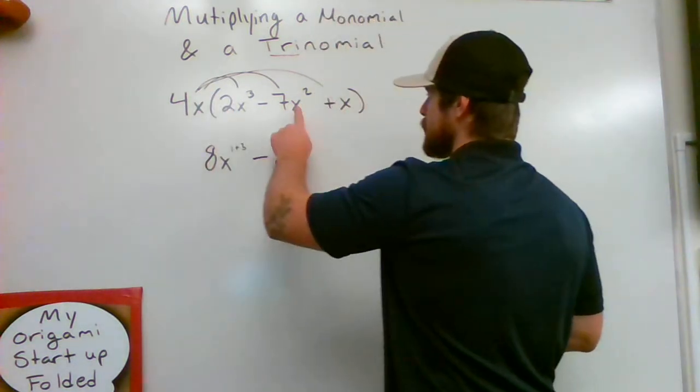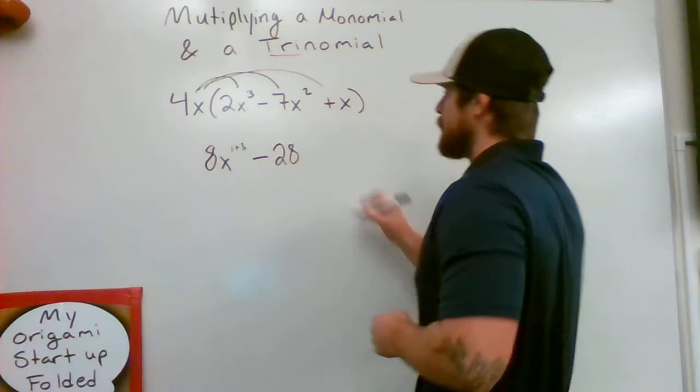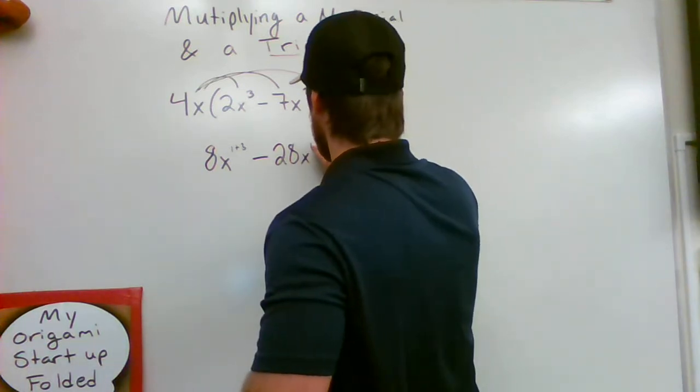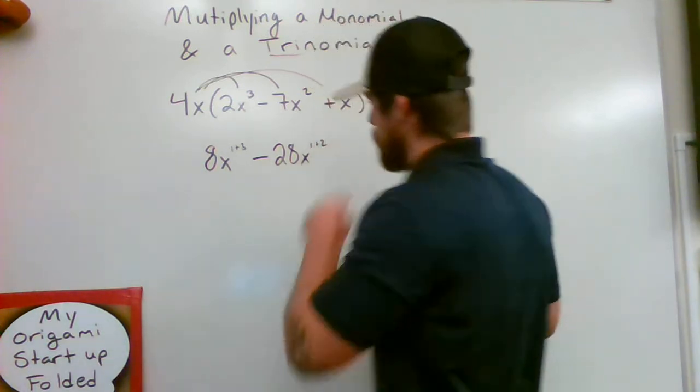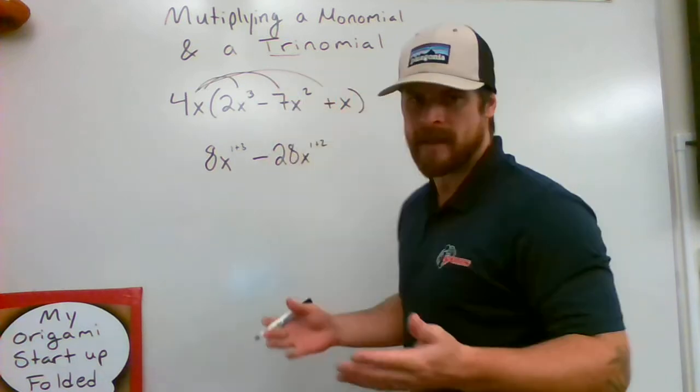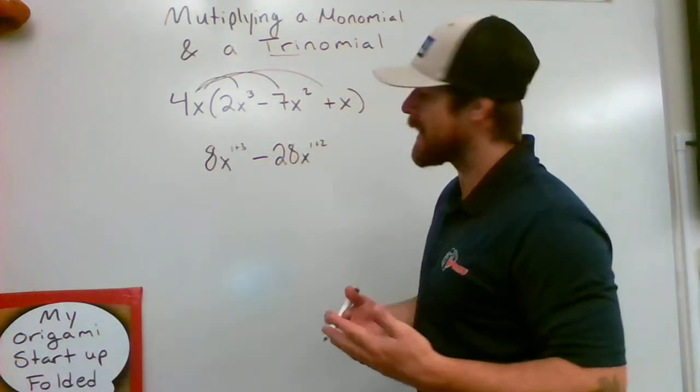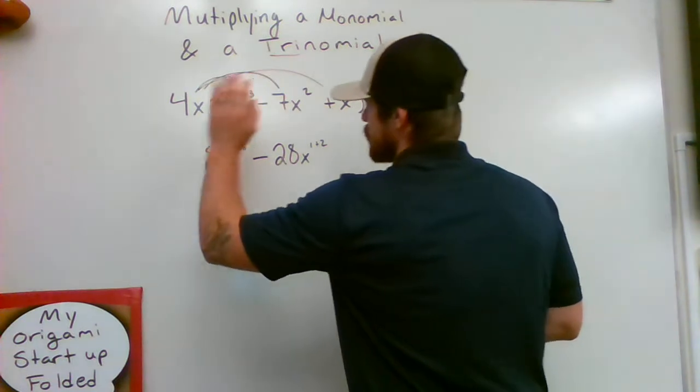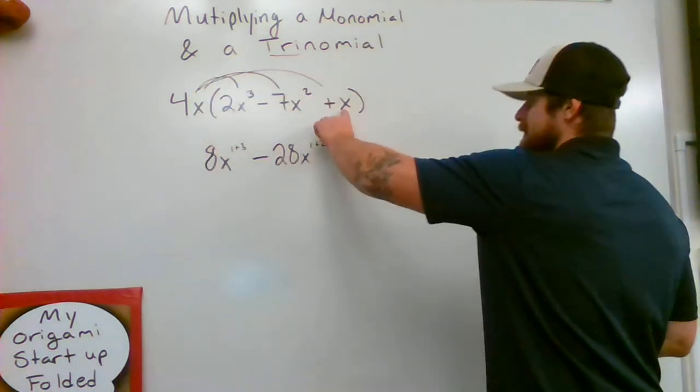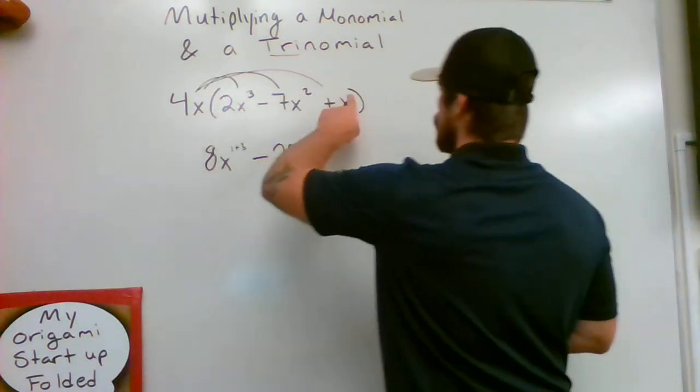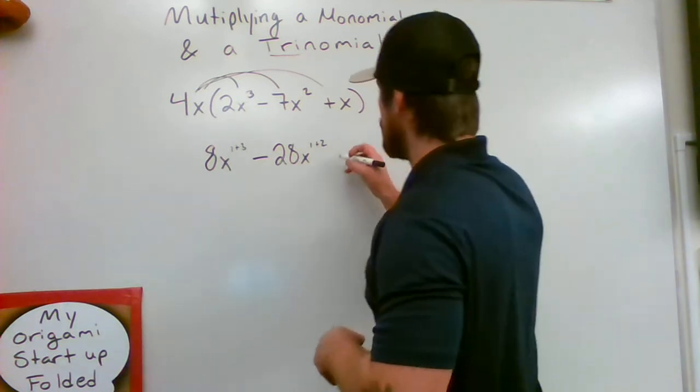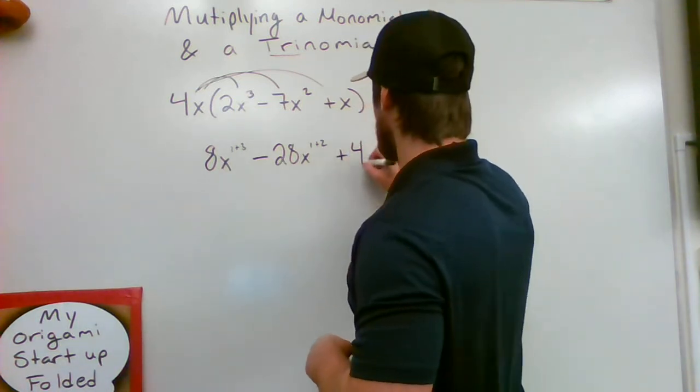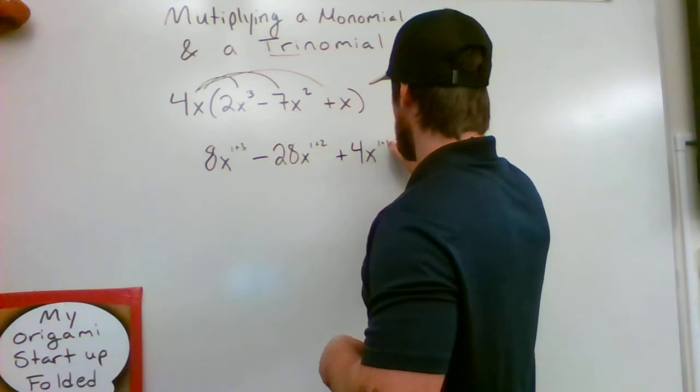And x to the first times x squared is going to give me x to the 1 plus 2. And we'll do that on the next step, which many of you probably already know what it's going to come out as, and that's great. But last but not least, we have 4x times x. There's a 1 above this x and a 1 above that x. We just don't show it. So we're going to end up getting positive 4x to the 1 plus 1.